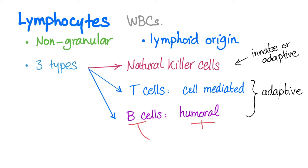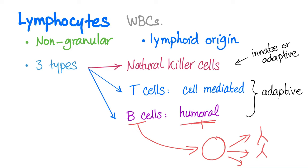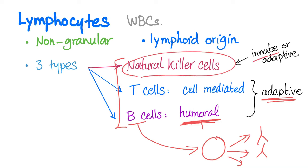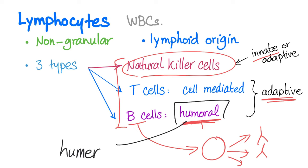These B-cells get converted into plasma cells and they produce a lot of antibodies into the body fluids — that's why it's known as humoral immunity, an adaptive immunity. The only lymphocytes that participate in innate immunity are the street fighters, the natural killer cells. Please don't confuse 'humoral' with an O with 'humeral' with an E — that's related to the bone called humerus, and we are not talking about anatomy here.